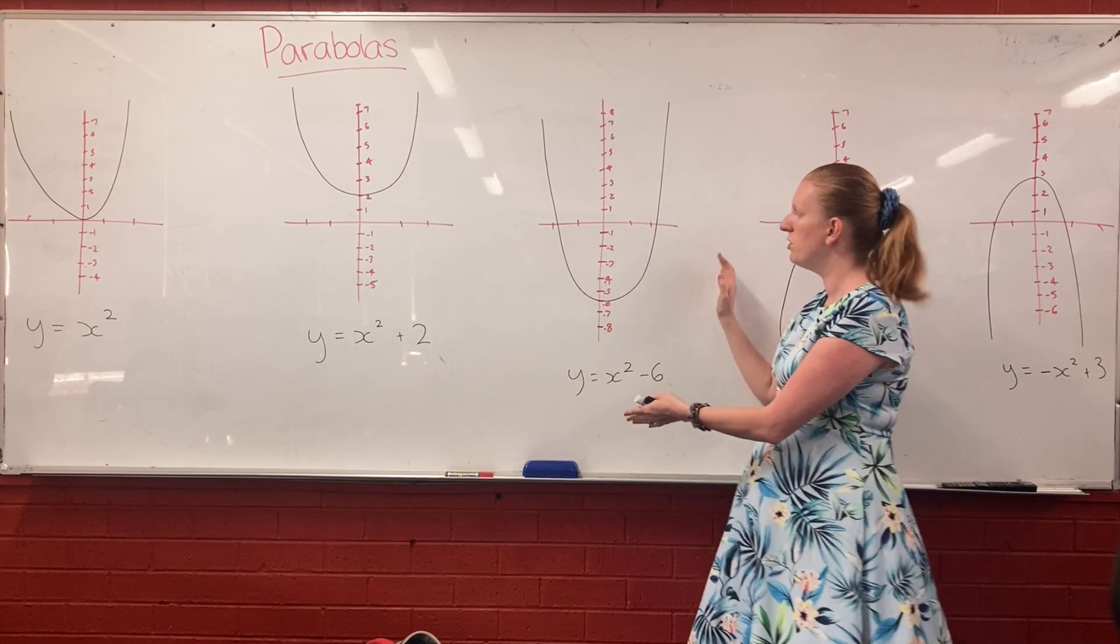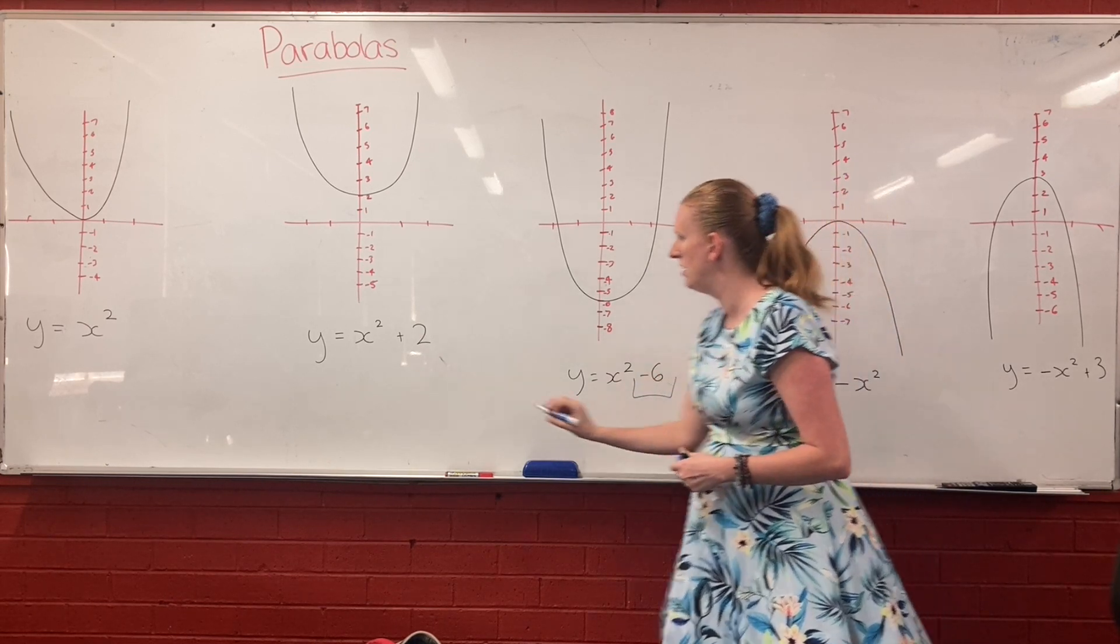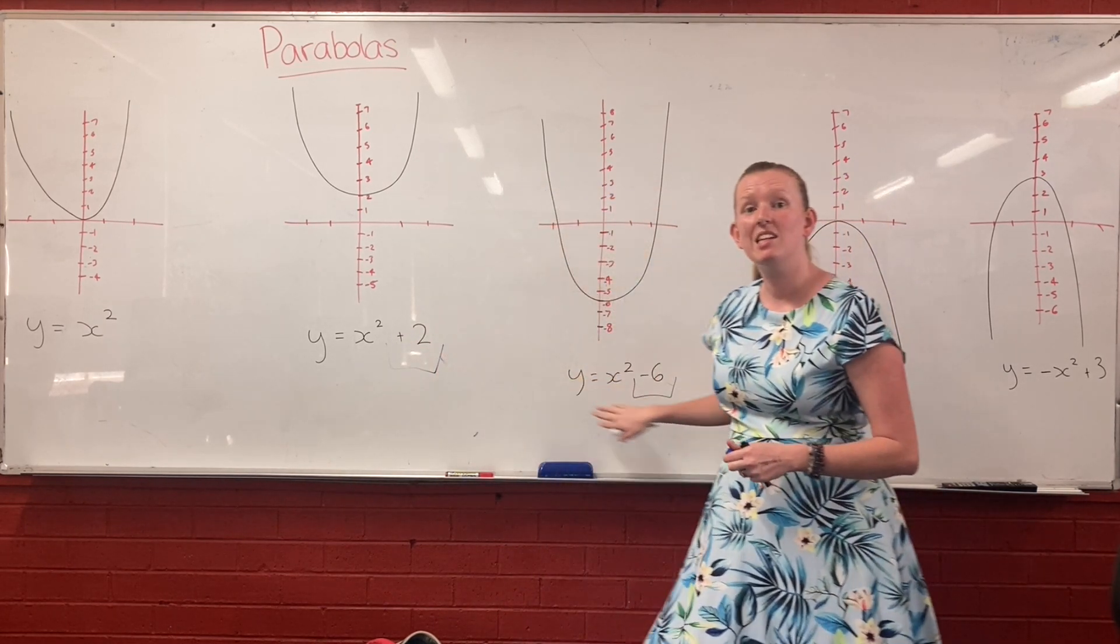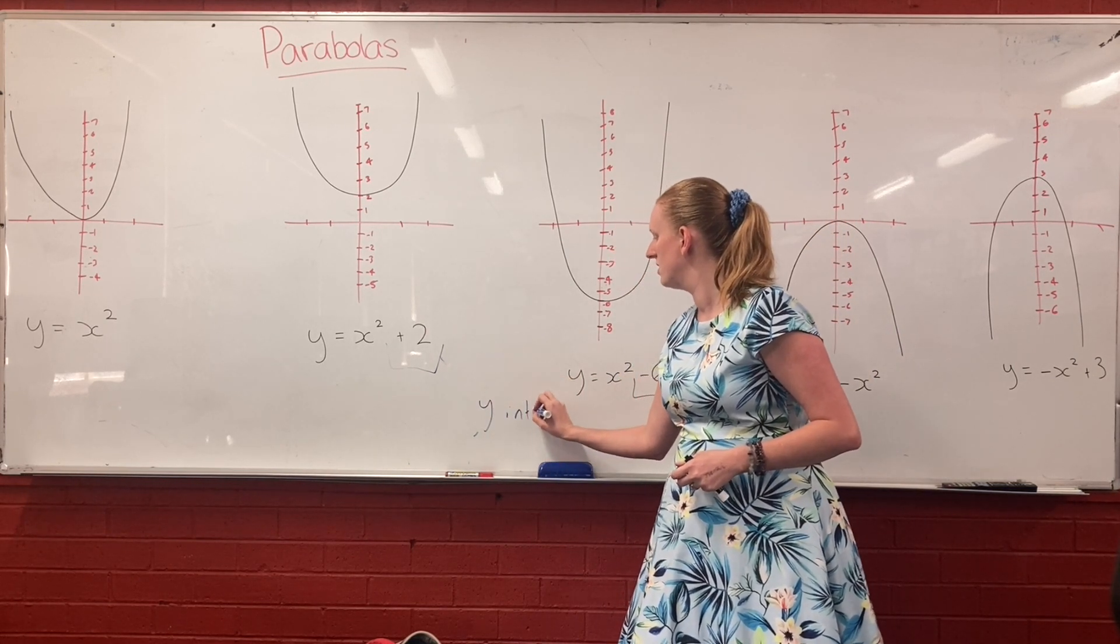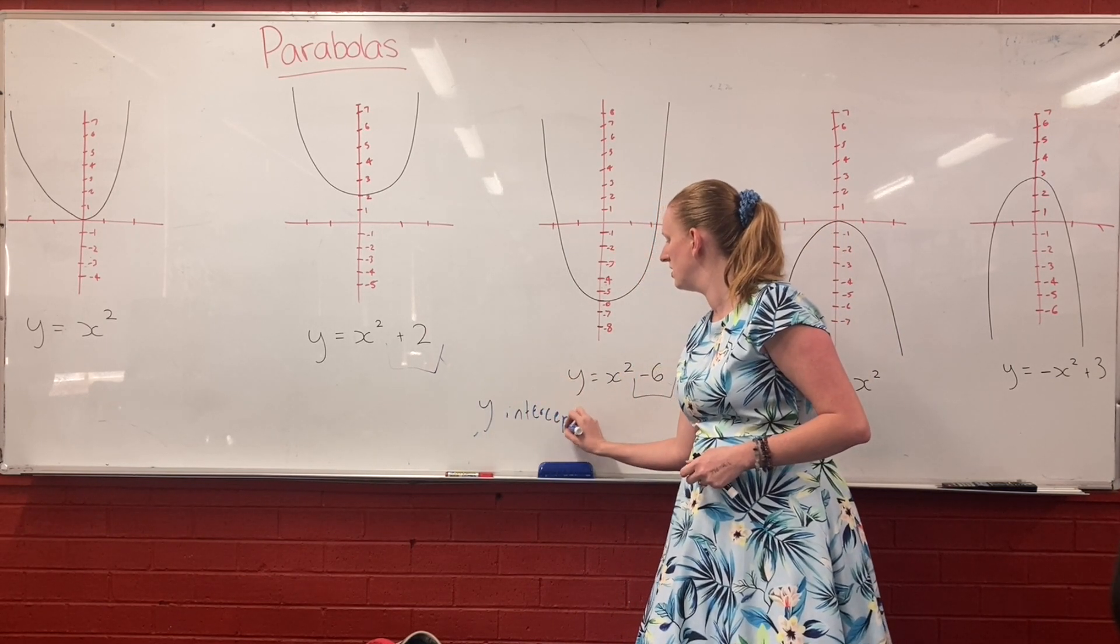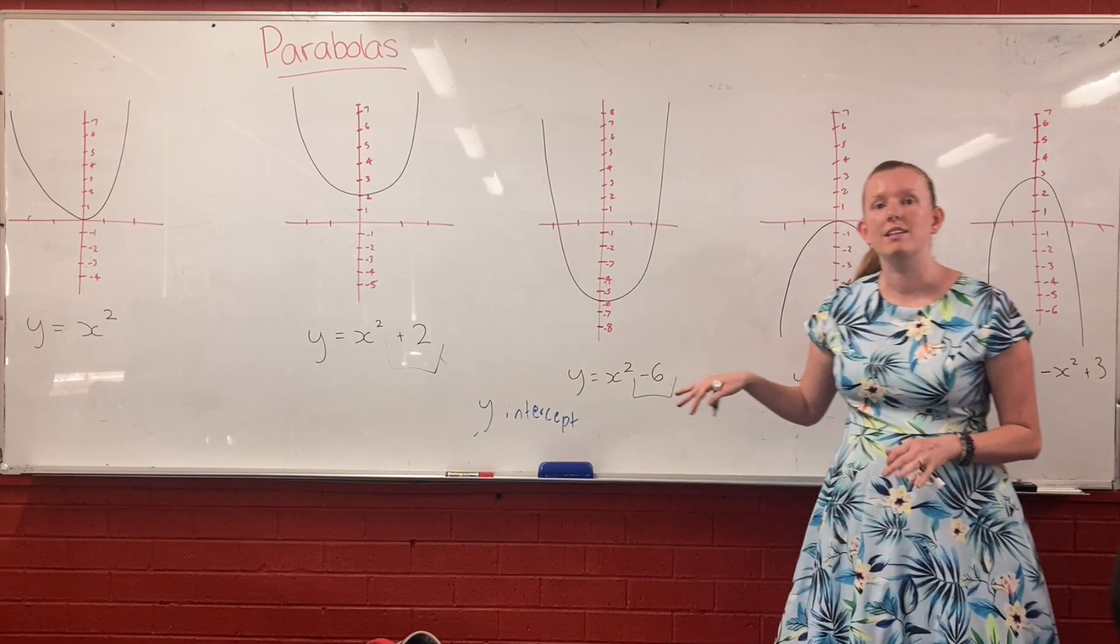So because it's been shifted down six spots, it's got a negative 6 on the end. So as I mentioned before, this here, so these things that are tacked onto the end there, they're called our y-intercepts. So that's where it's touching.